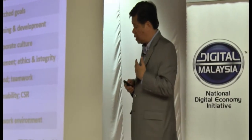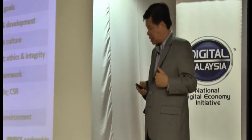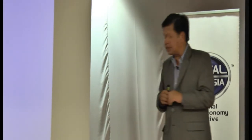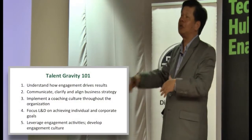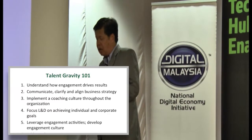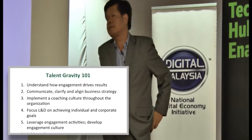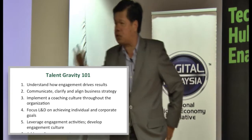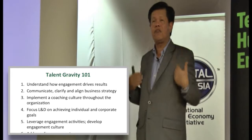Hopefully from there we start to learn how to do it. Some of you may have already implemented talent engagement in your organisations, so I apologize — the last two slides go back to basics. What does implementing talent gravity in an organisation mean? Talent Gravity 101 — in the US, all freshman courses are titled 101. One: understand how engagement drives results. You need to understand, if I engage with my employees a lot more, what can they give back to me?